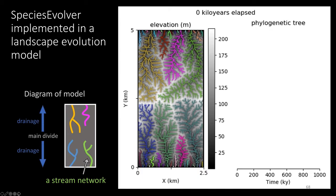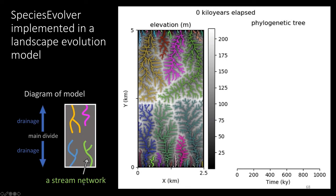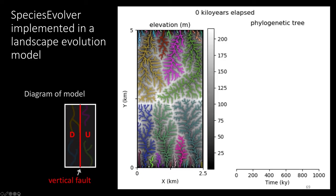So on the right side is an animation I will play of Species Evolver implemented in a model created with Landlab. However, let's first look at the lower left where the diagram of the model. There are stream networks draining to the north and to the south. Each color stream network is a distinct continuous stream network. Once the model starts, very soon after it starts, there'll be a vertical fault that uplifts the right side of the model grid about 40 meters higher relative to the left side.